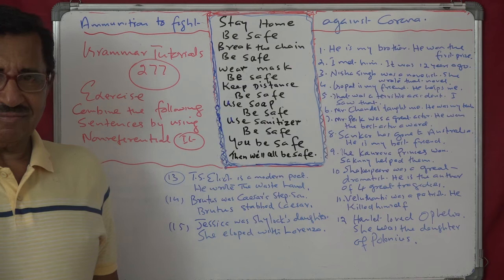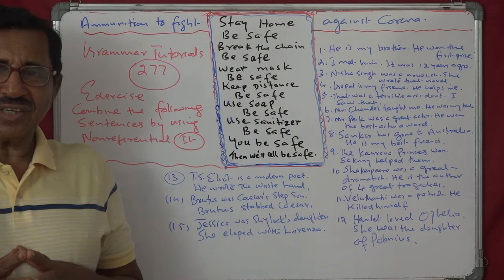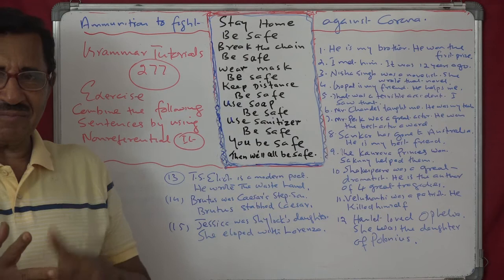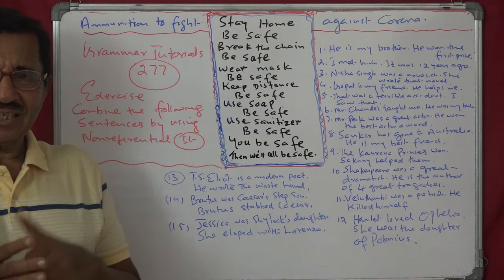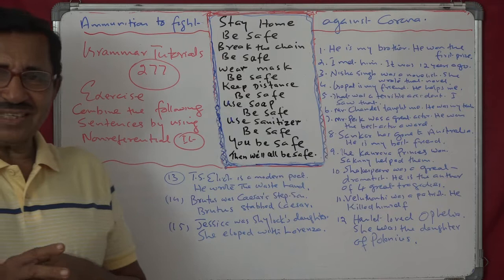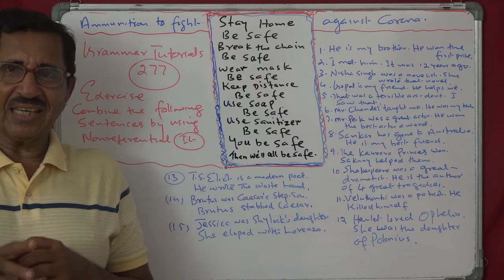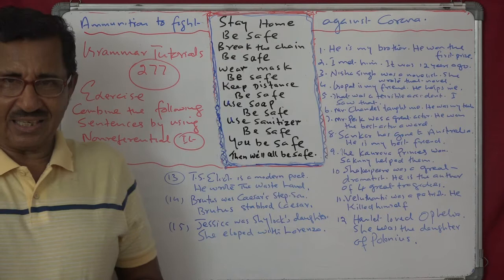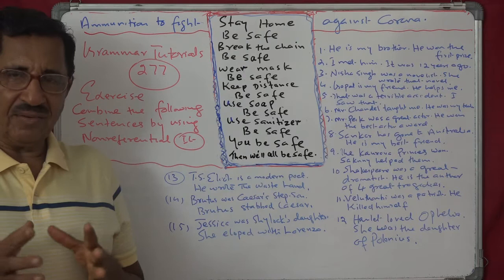So this is how you use the non-referential 'it'. Other uses we have already seen — weather, days, time, date, climate — those things we have already seen. This is another way. In fact, this is part of style also.